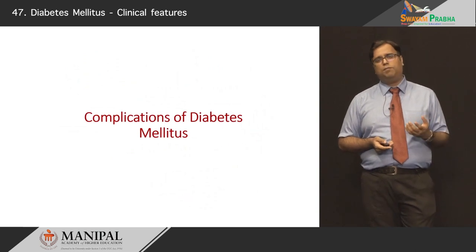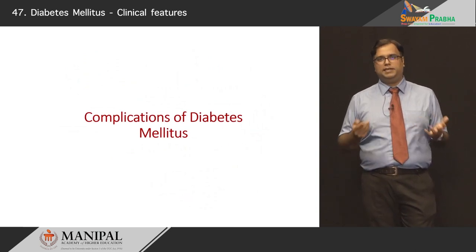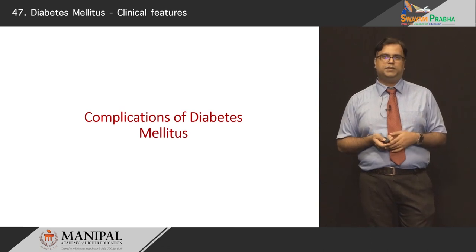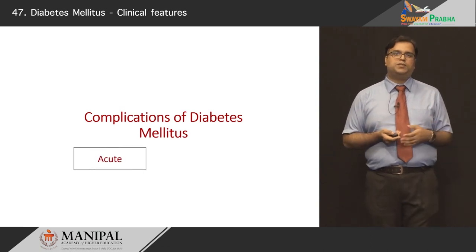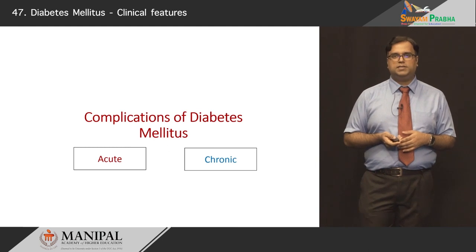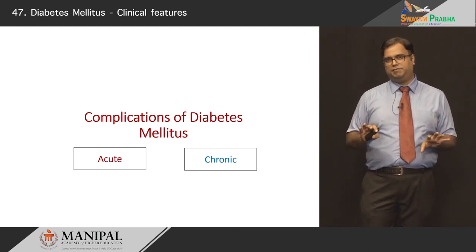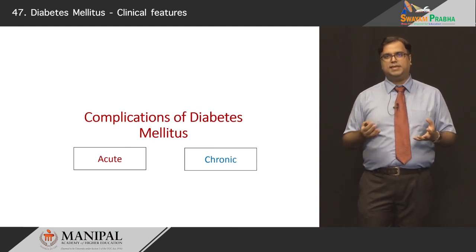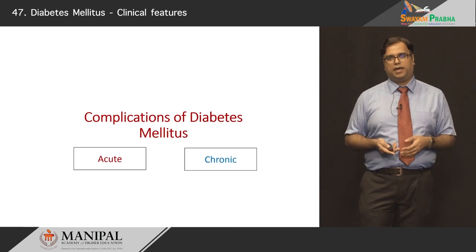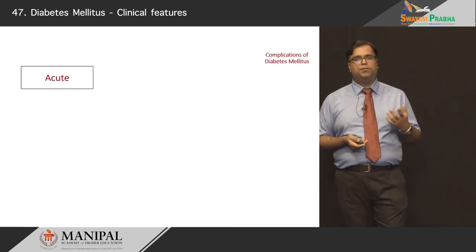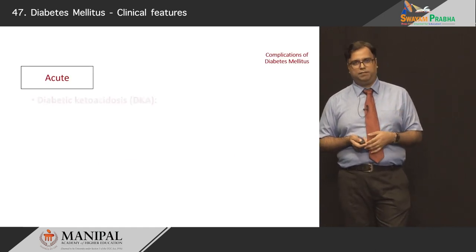Now, what are some of the complications of diabetes mellitus? What can it lead to? Why is it such a big burden of disease in our community? These are called acute and chronic complications. Their behavioral patterns are slightly different, so we need to address them as strict categories. Looking at acute complications, they tend to be more metabolic in nature.